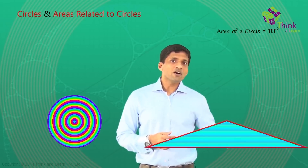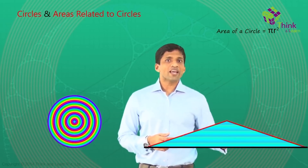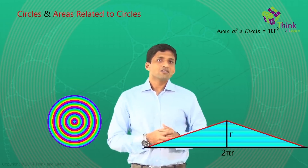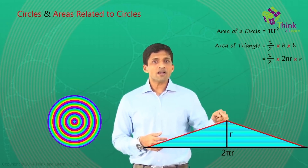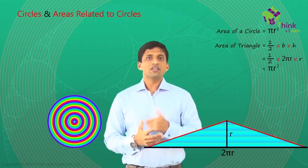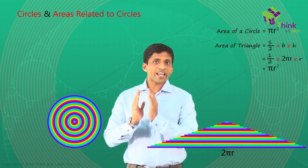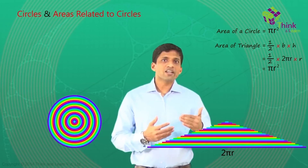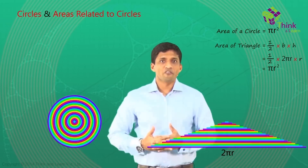So what is the area of the triangle here? The base here is 2 Pi R. Height here is R. So we can directly write down half into 2 Pi R into R, which is nothing but Pi R square. Very easy and interesting, right? So this way, we can visualize area of a circle using a triangle. And I am sure you have not seen area of a circle explained this way before.